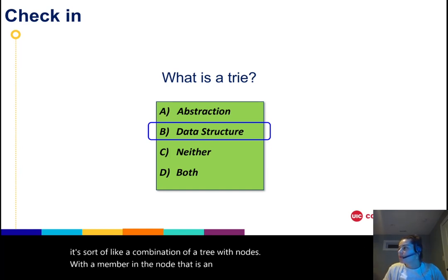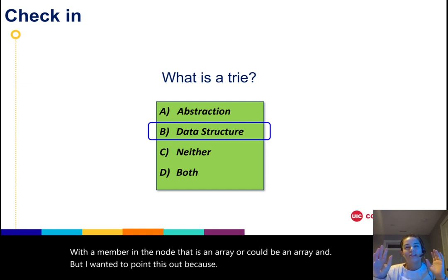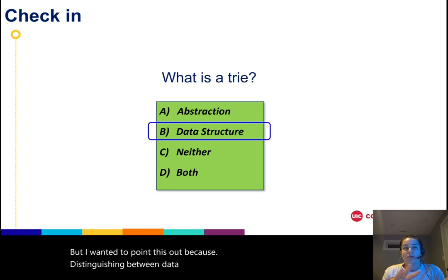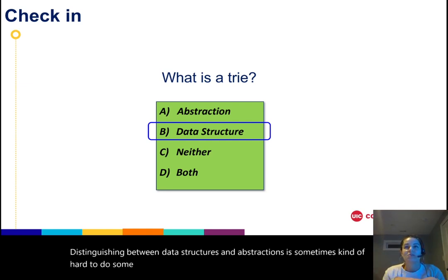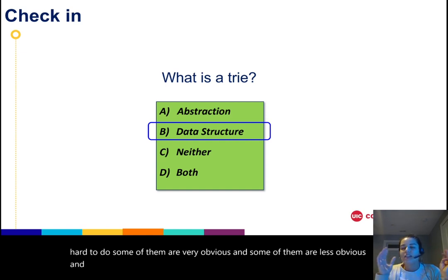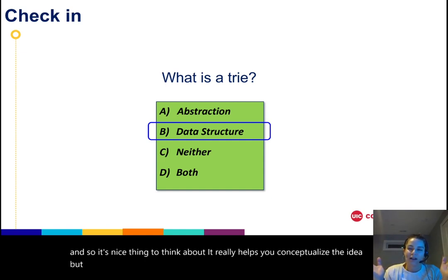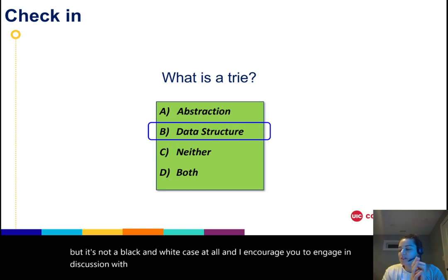I wanted to point this out because distinguishing between data structures and abstractions is sometimes kind of hard to do. Some of them are very obvious and some of them are less obvious. It's a nice thing to think about - it really helps you conceptualize the idea. But it's not a black and white case at all, and I encourage you to engage in discussion with each other about some of these things because it's interesting to consider.